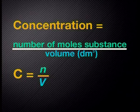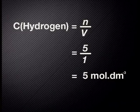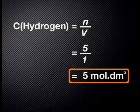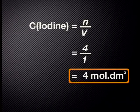Remember, the concentration of a gas is the number of moles present divided by the volume of the container in decimeters cubed. We are given moles and told that the volume of the container is one decimeter cubed. So, the concentration of hydrogen is five moles per decimeter cubed, and the concentration of iodine is four moles per decimeter cubed.